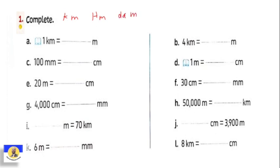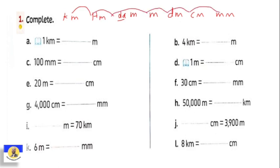Decameter can be abbreviated as 'dam'. Then meter, then decimeter, centimeter, millimeter. As we agreed: when changing from the greatest to the smallest, we multiply by 10 each step we move going from greatest to smallest.